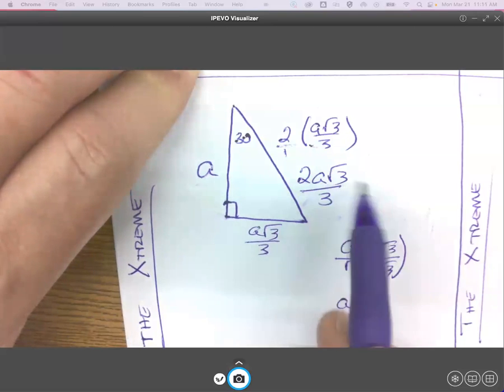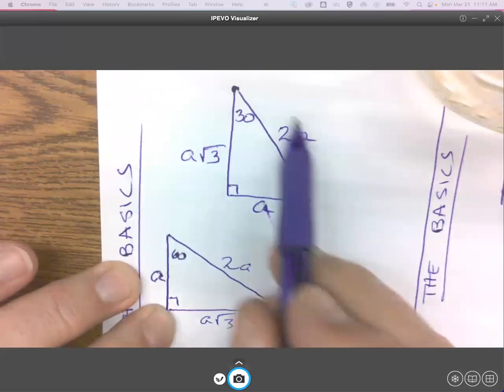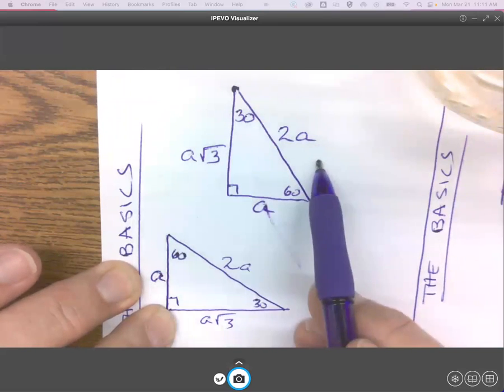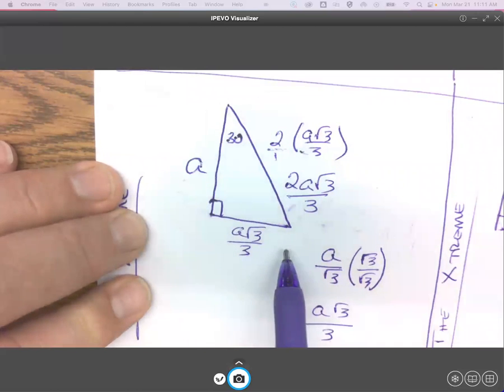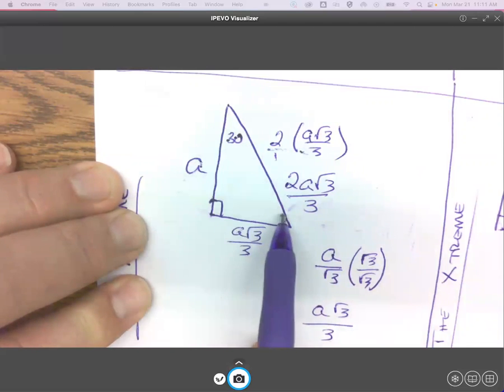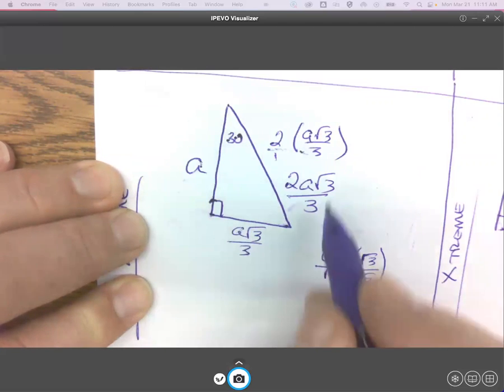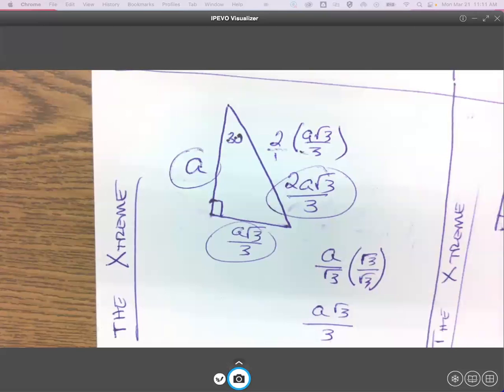If you don't already have this in your notes, I think having both this basics formula and the extreme version, when you're given an integer value opposite 60, are helpful to have. Any questions on these? And they're on the front board for you too.